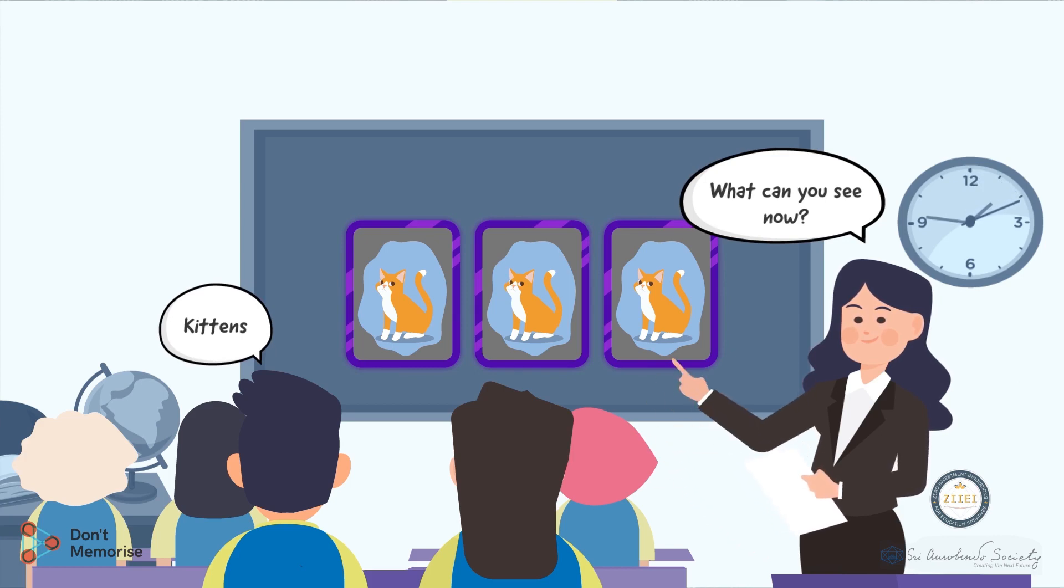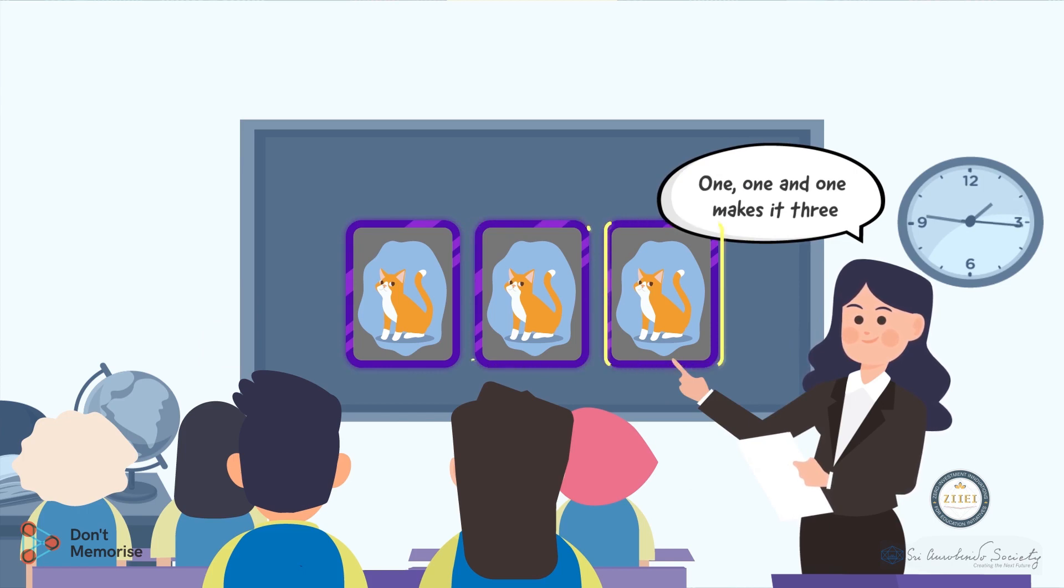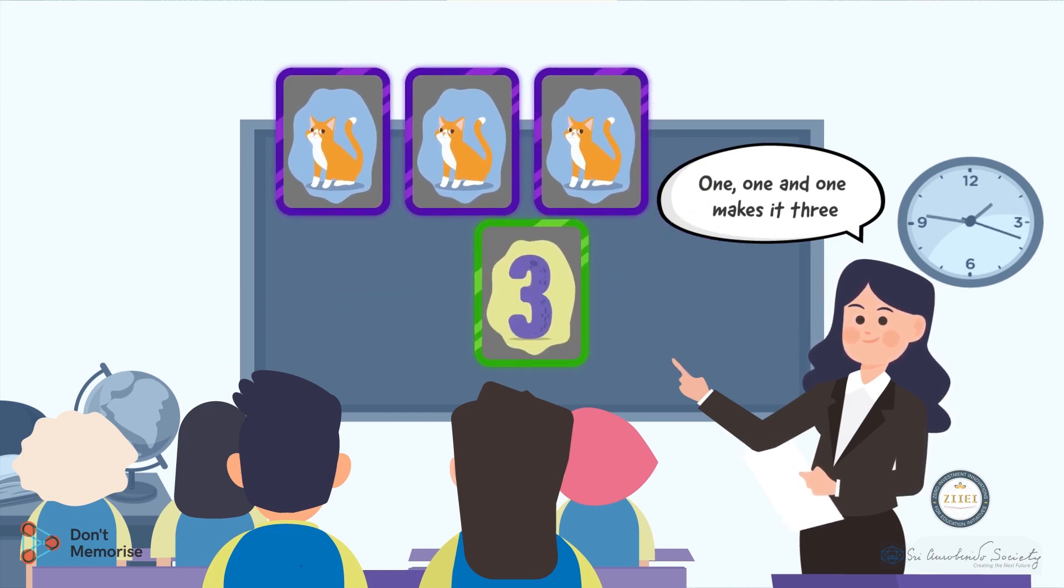Next, point towards each of these three kittens and say, one, one and one makes it three. While saying the number three, we will simultaneously display the corresponding digit card.